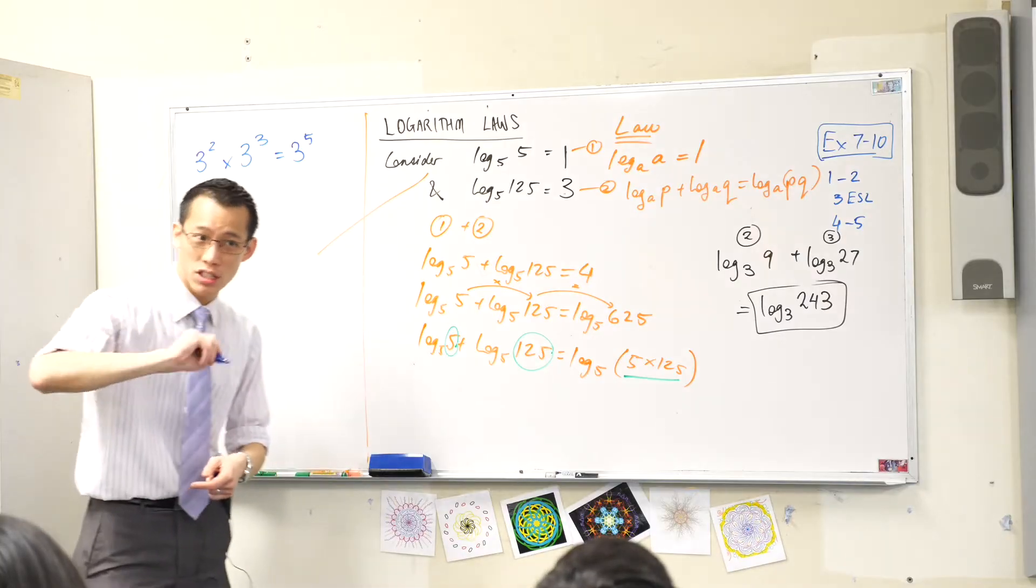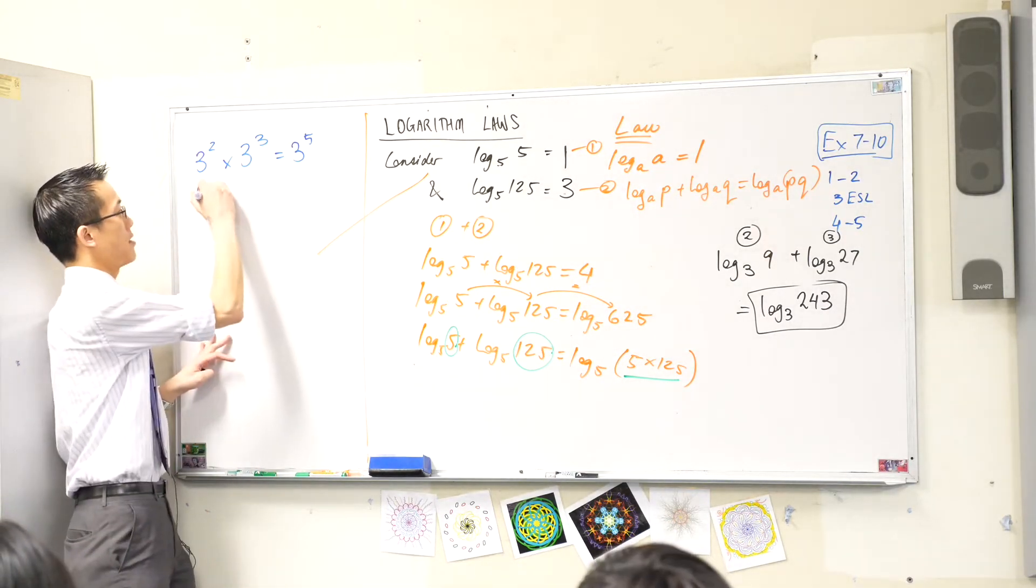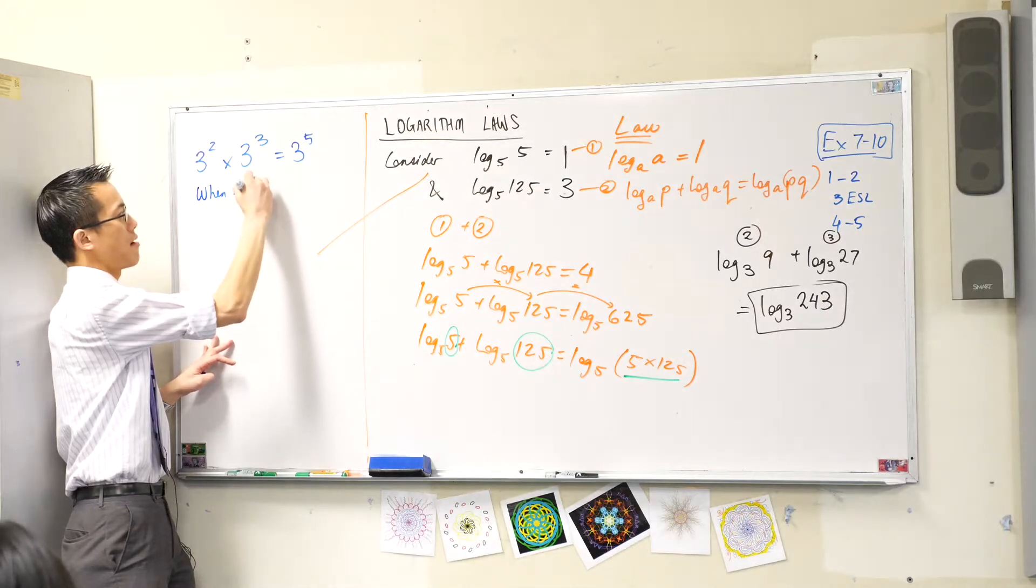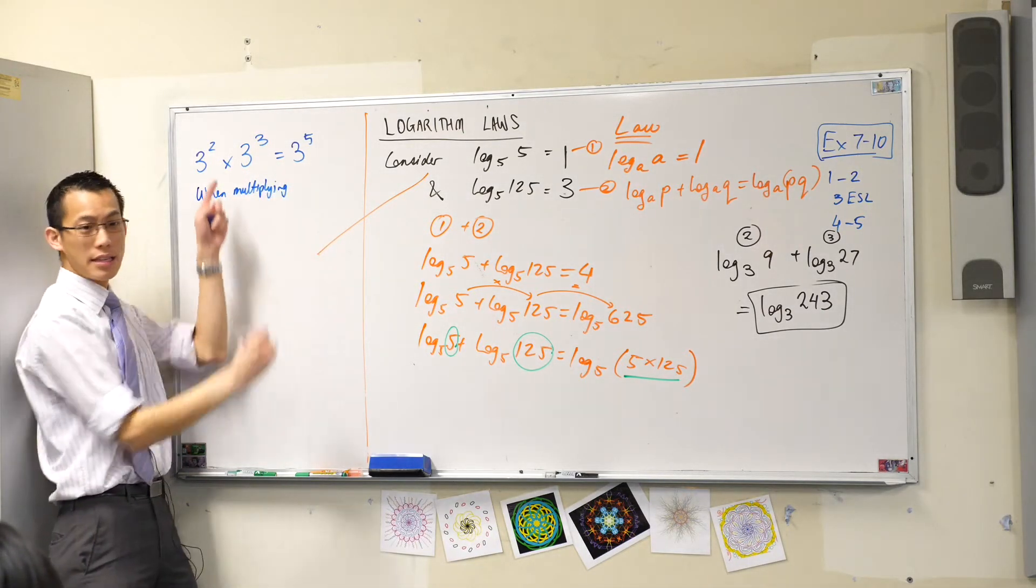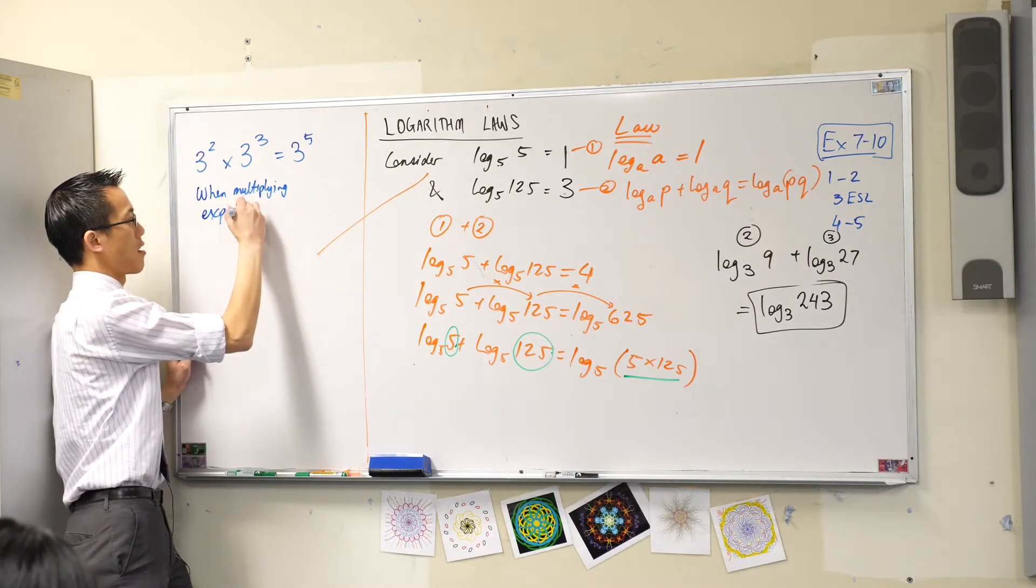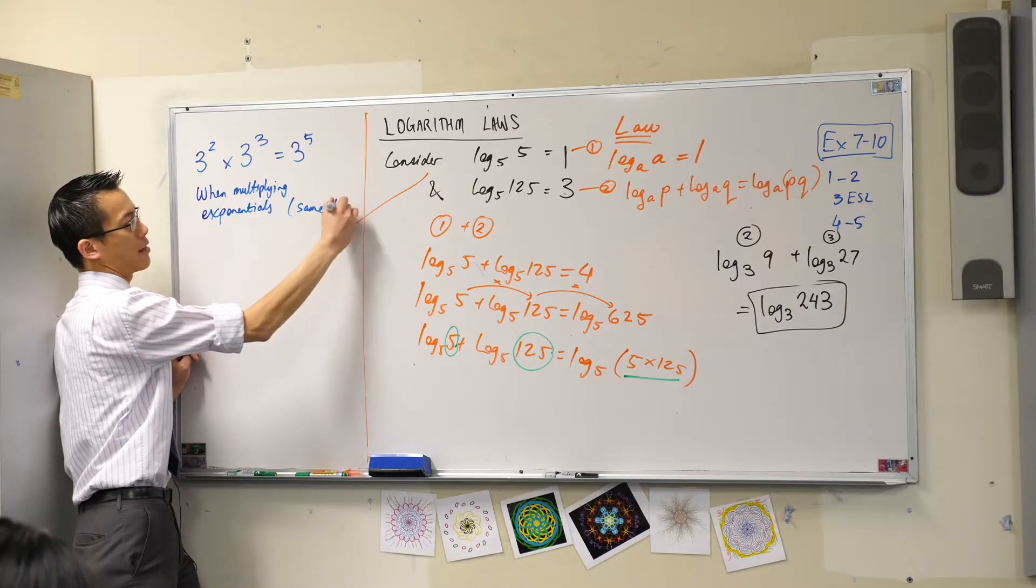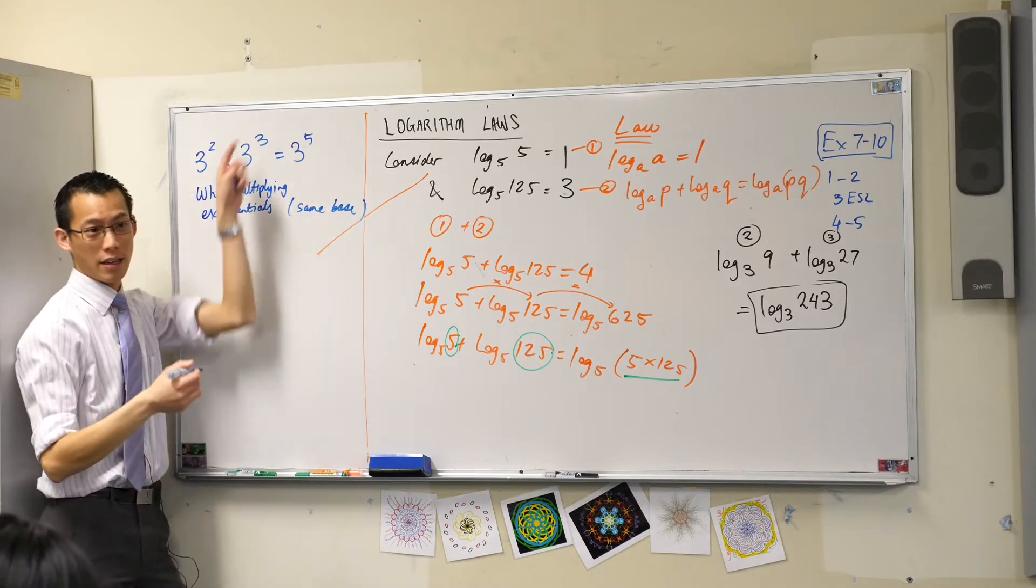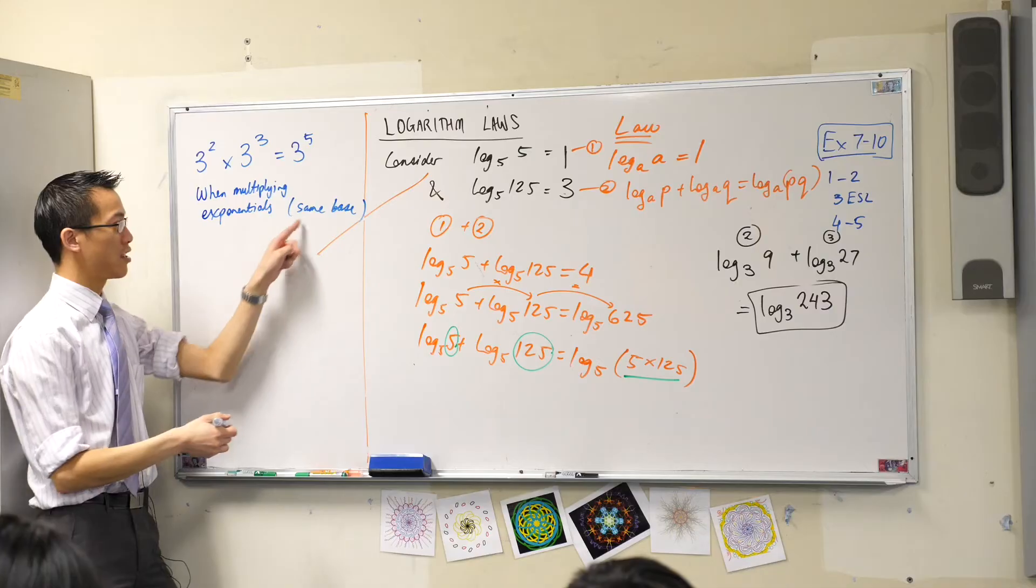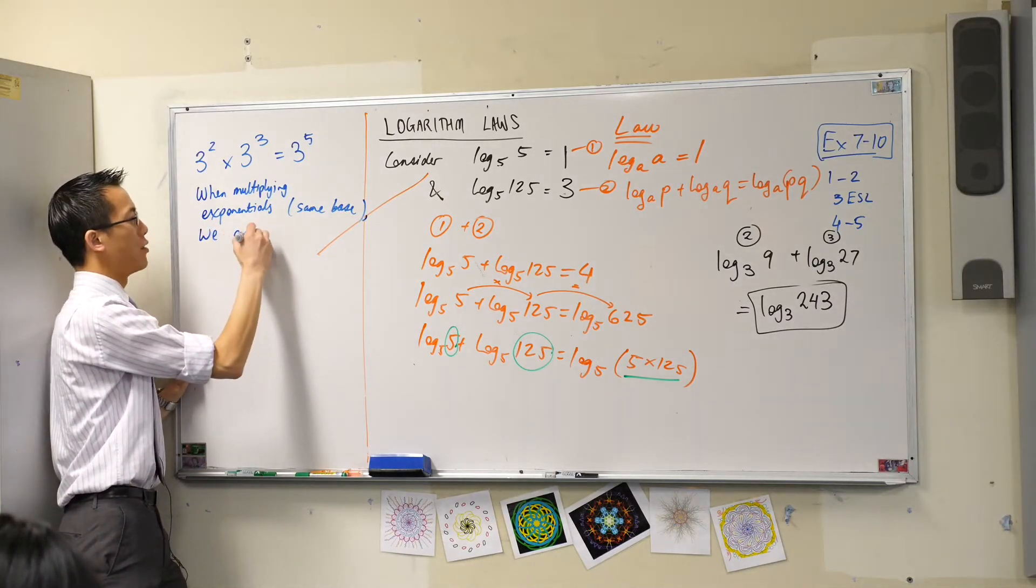In fact this is so important let's just write it down so that we get it straight in our head. When multiplying exponentials, that's what these guys are, stuff with powers up the top. So long as they have the same base like this is 3 to the power of something and 3 to the power of something else. So long as they have the same base we add powers.